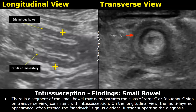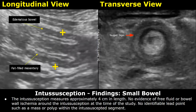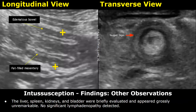The intussusception measures approximately 4 centimeters in length. No evidence of free fluid or bowel wall ischemia around the intussusception at the time of the study. No identifiable lead point such as a mass or polyp within the intussusception segment. No other abnormalities were found.